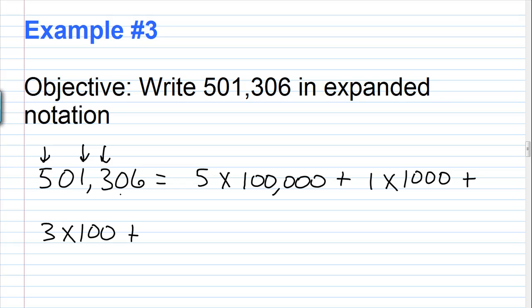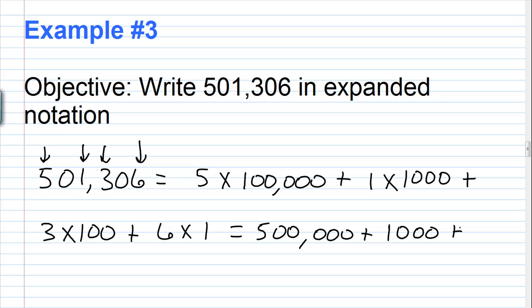The next digit to the right is a 0, so you can skip it. Then we move to the next digit, we have a 6, and that's in the 1s place, so 6 times 1. Going through and multiplying: 5 times 100,000 is 500,000, plus 1 times 1,000 which is 1,000, plus 3 times 100 which is 300, plus 6 times 1 which is 6. So 501,306 written in expanded notation is 500,000 plus 1,000 plus 300 plus 6.